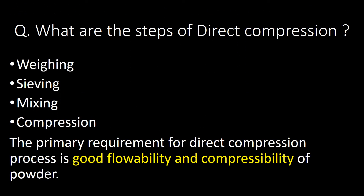What are the steps of direct compression? Direct compression can be done in four steps: first, weighing; second, sieving; third, mixing; and fourth, compression. The primary requirement for the direct compression process is good flowability and compressibility of the powder.